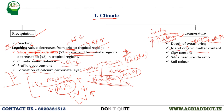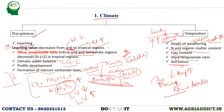Clay content increases as temperature and rainfall increase, leading to more weathering. The silica to sesquioxide ratio decreases as temperature increases. Regarding soil color, in young soils the color is influenced by parent material, but with increasing age and temperature, soil color changes. Soils in warmer zones tend to be darker in color, while soils in cooler zones tend to be lighter in color. These are the precipitation and temperature factors influencing soil formation.